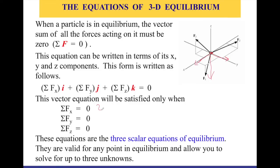These are the conditions that we need to apply. So all the forces on the X-axis should equal to zero, all the forces on the Y-axis should equal to zero, and all the forces on the Z-axis should equal to zero. This will give you three equations — one, two, and three. These three scalar equations of equilibrium are valid for any point in equilibrium, and they will allow us to solve for up to three unknowns in our system.